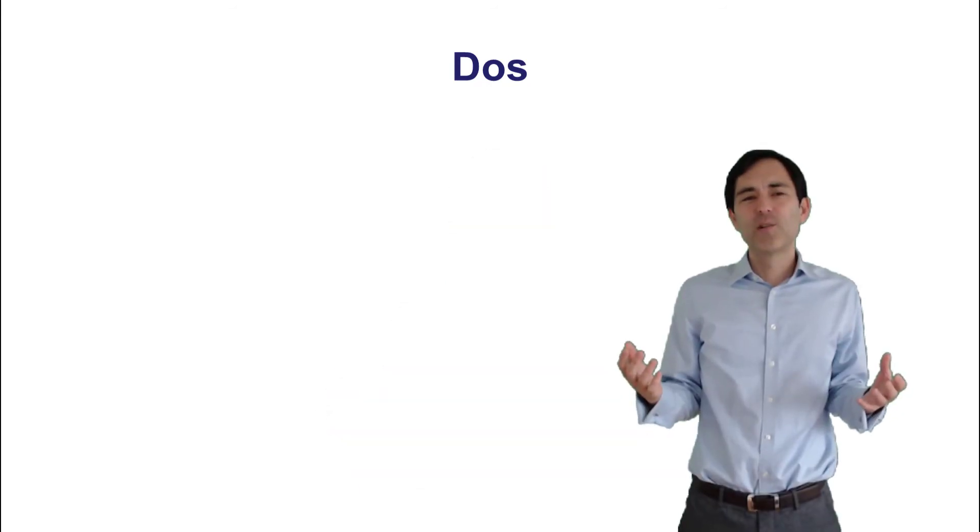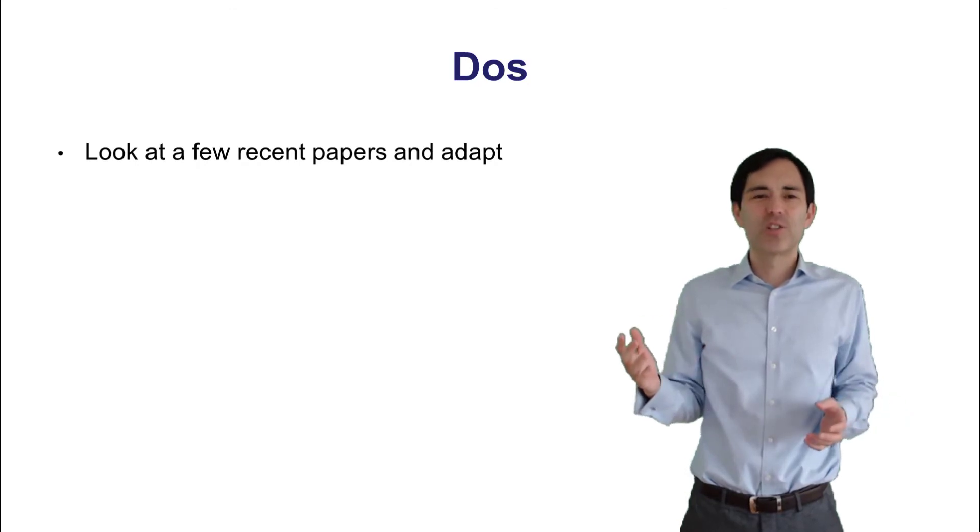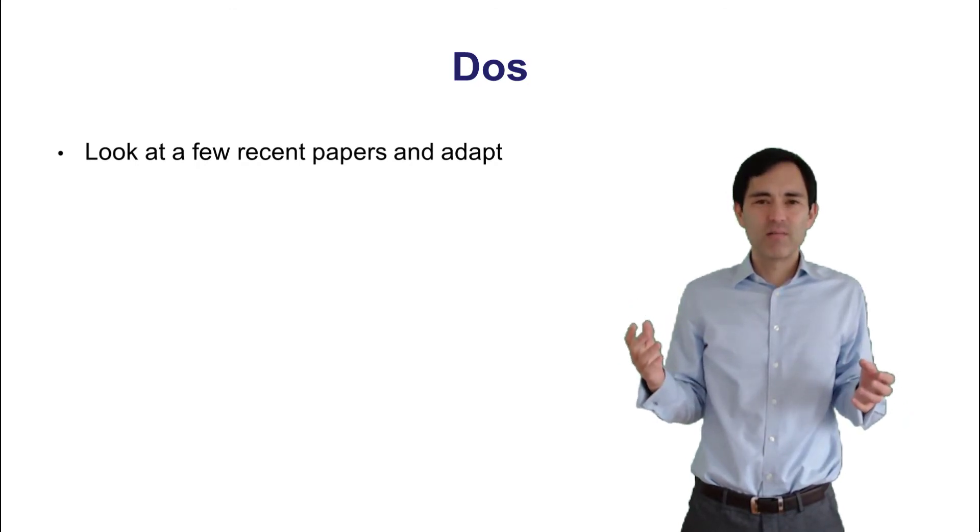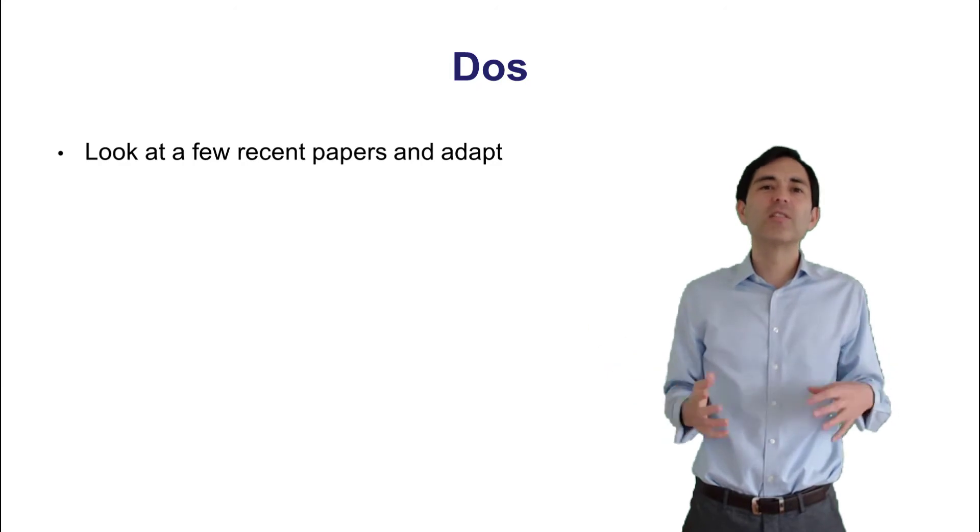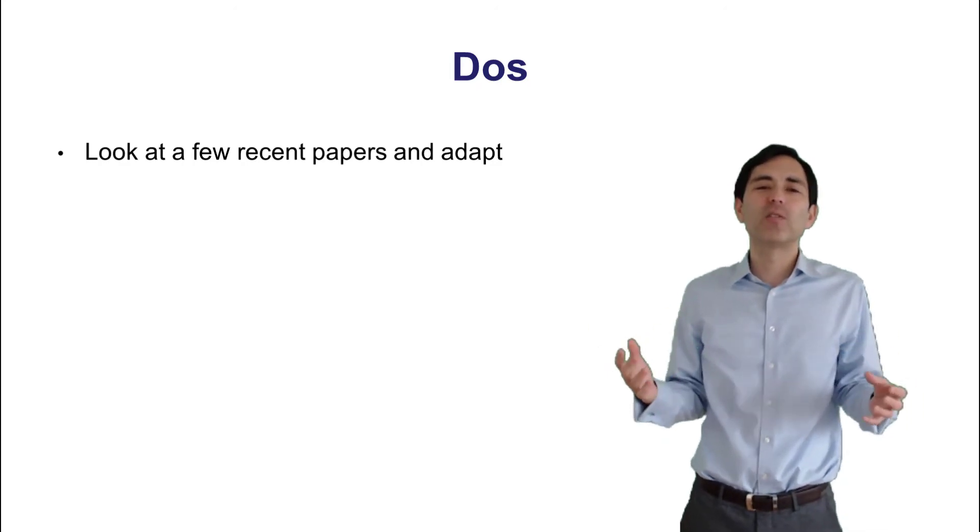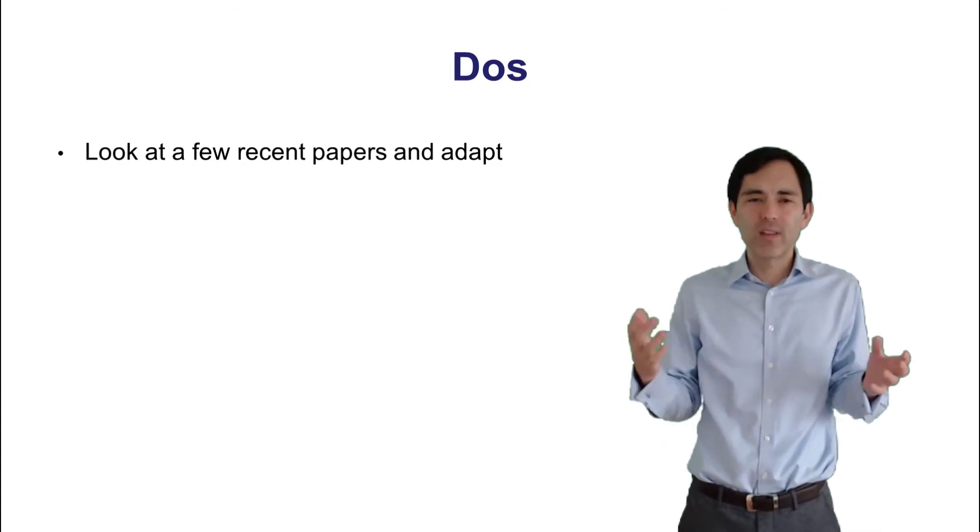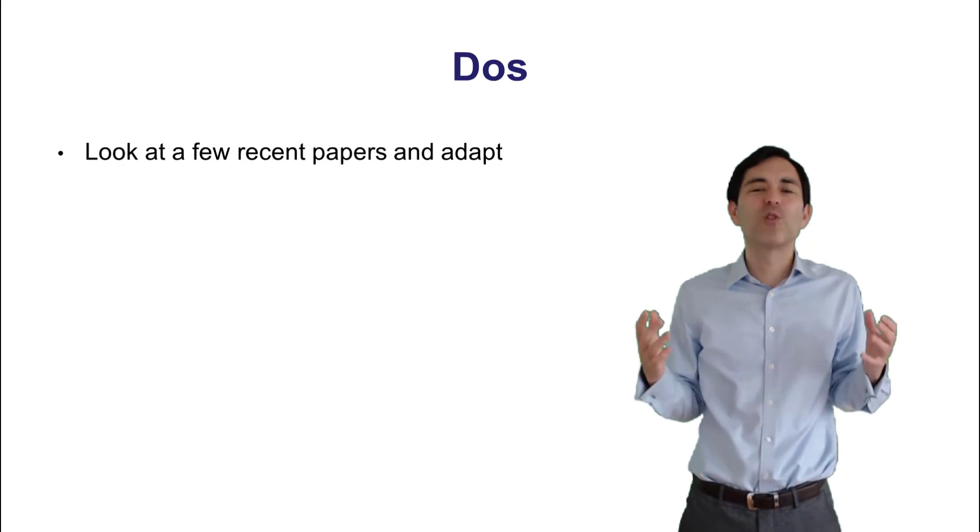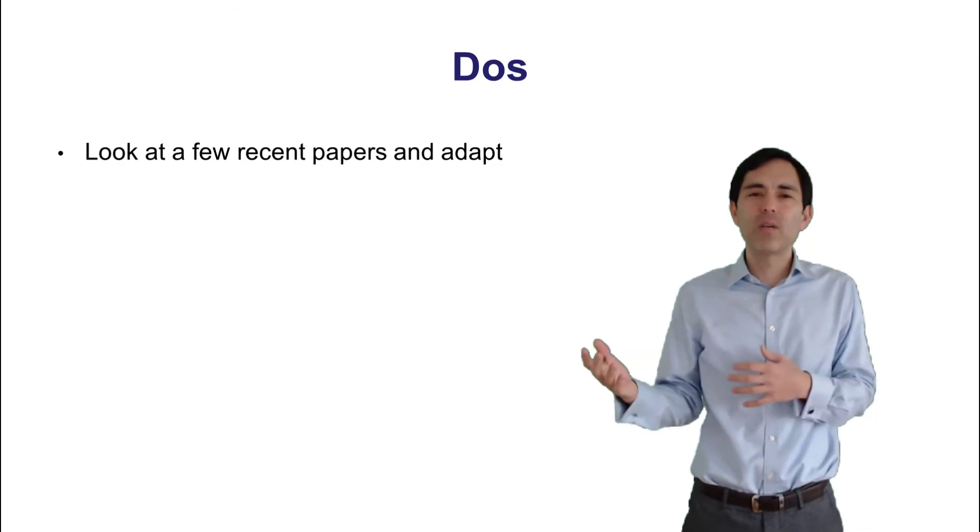First of all, as I already mentioned, there are different types of discussions. And you would write a discussion that pleases the authors, reviewers and readers of a certain journal. So very simple. Look at that journal. How are discussions written in that journal? And then maybe you need to adapt.